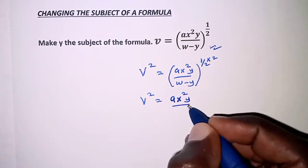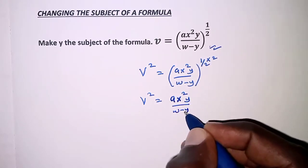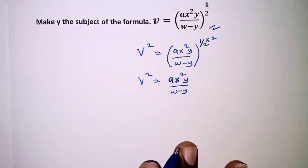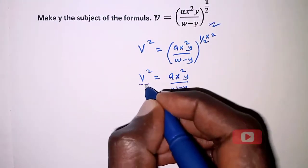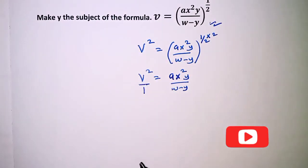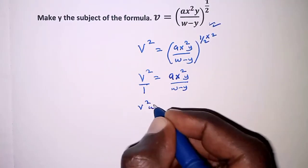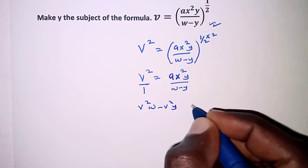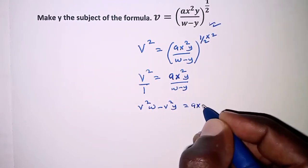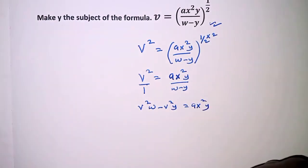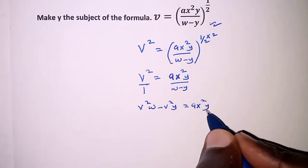And then having this over 1 for the sake of cross multiplication, we'll cross multiply and therefore we have V squared W minus V squared Y is equal to ax squared Y.